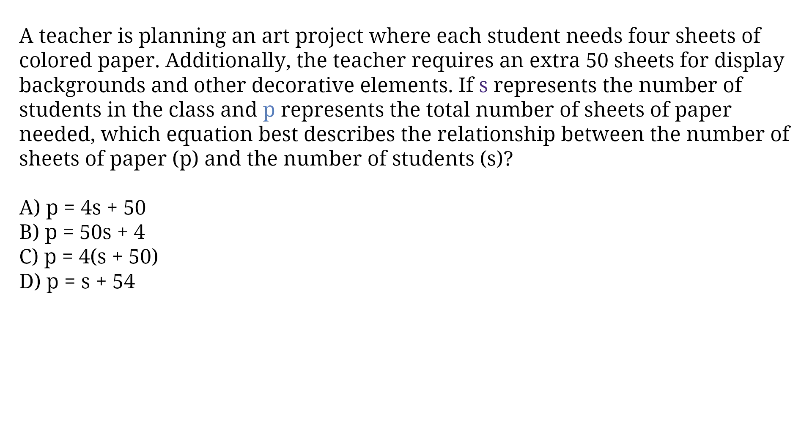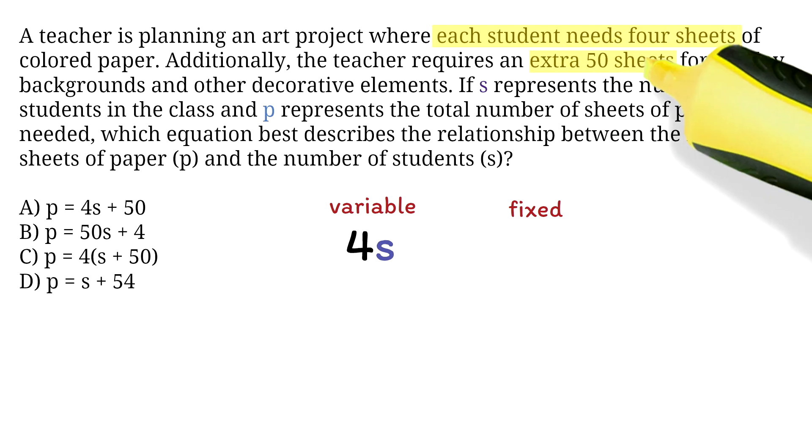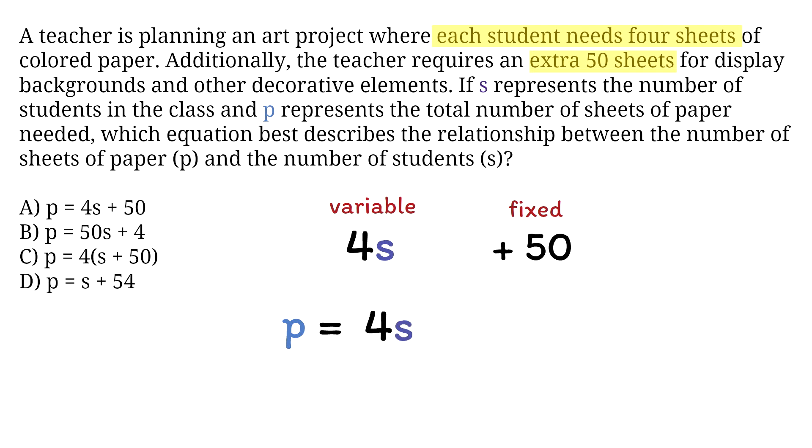Let's break it down. Questions like this typically involve a fixed part and a variable part. First, let's think about what the teacher needs. Every student needs four sheets of colored paper for the project. So if you have S students, you would need four sheets for each student. This means you multiply the number of students, S, by 4 to get 4S. This is the variable part. Next, the teacher also needs 50 extra sheets for the display backgrounds and other decorations. This is a fixed number and doesn't depend on the number of students. Now, if we put these two parts together, the total number of sheets of paper needed, P, would be the sheets for the students, 4S, plus the extra 50 sheets. So, the correct answer is option A, P equals 4S, plus 50.